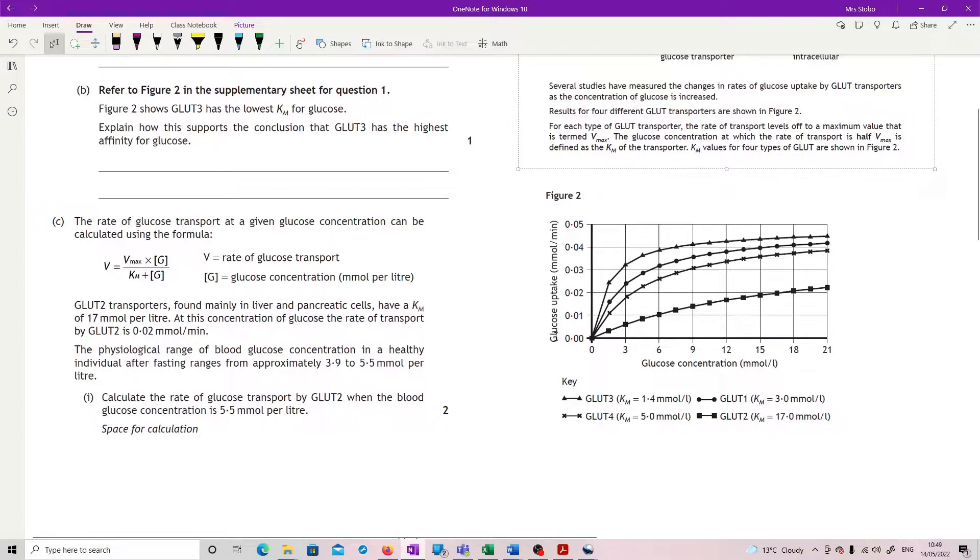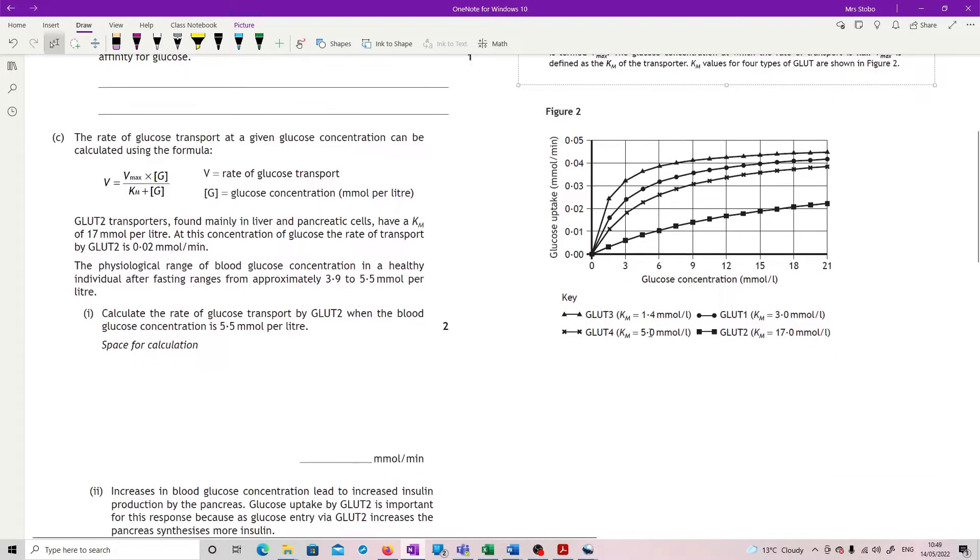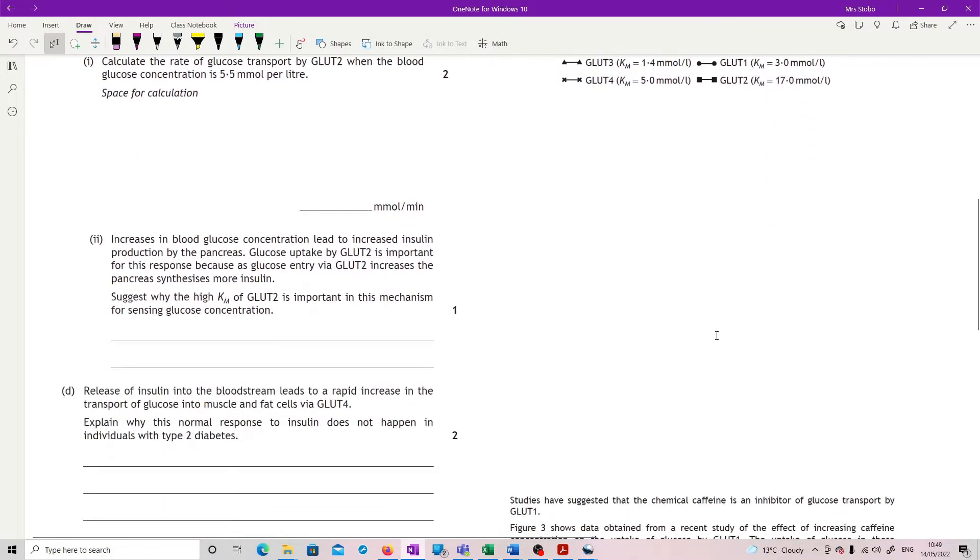Figure 2: we've got glucose uptake in millimolar per liter per minute, and along the bottom we've got millimoles per liter of glucose concentration. So as we're increasing glucose concentration along the bottom, you've got an increase in uptake and we can see it looks like a standard kind of limiting factors curve. There's something becoming an issue at the top end and you've got your different GLUT receptors.